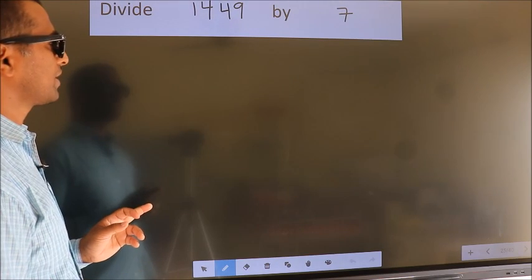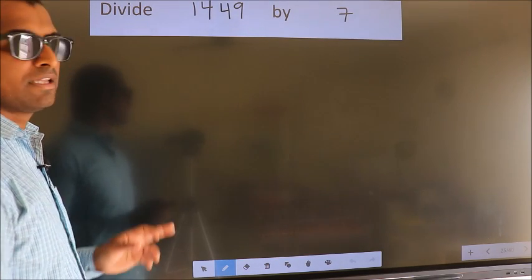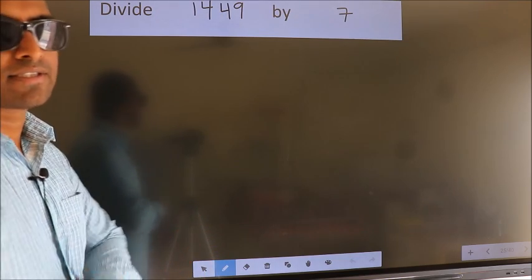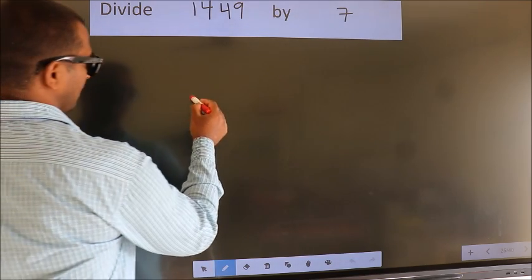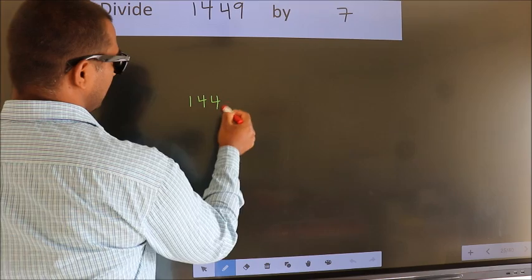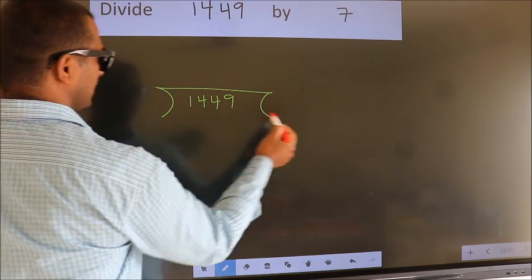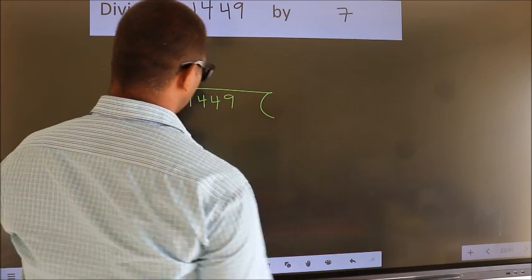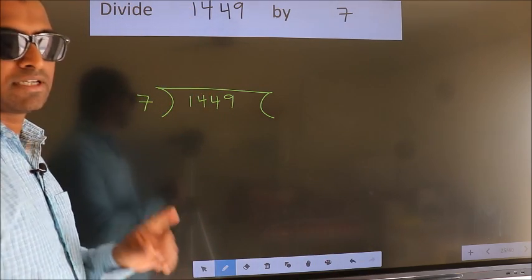Divide 1449 by 7. To do this division, we should frame it in this way. 1449 here, 7 here. This is your step 1.